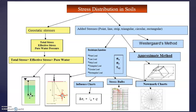We will study each method in detail. Mainly, there are geostatic stresses and additional stresses. Geostatic stresses we have already done — using Mohr-Coulomb, you can calculate total stress, effective stress, and pore water pressure. For the additional stresses, you have to use the Bousinesque equation, Westergaard method, and approximate method. For the Bousinesque equation, there are different types of influence charts, stress bulbs, and Newmark charts that you have to use.